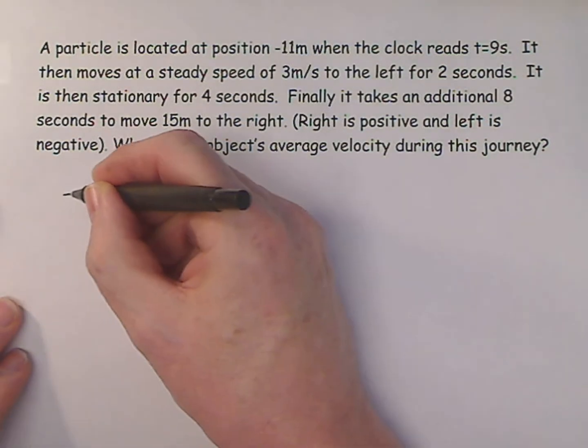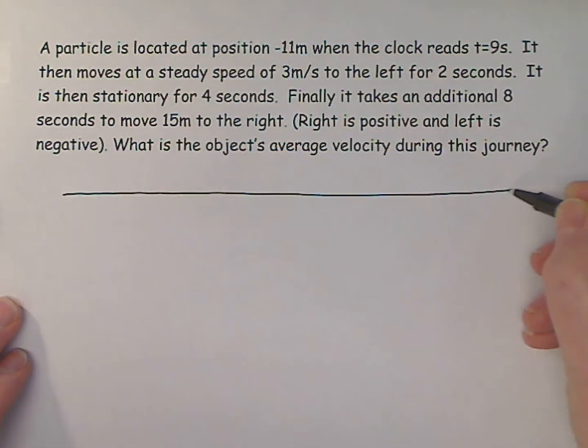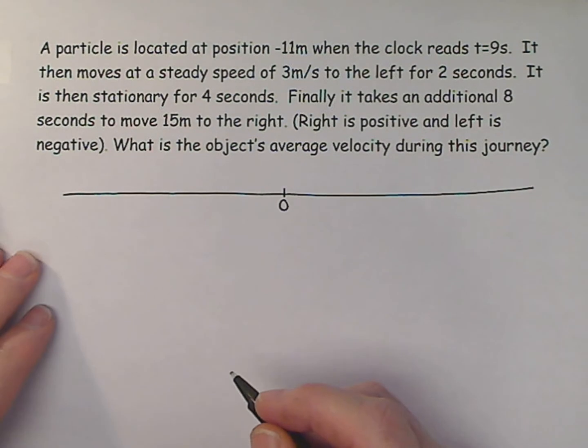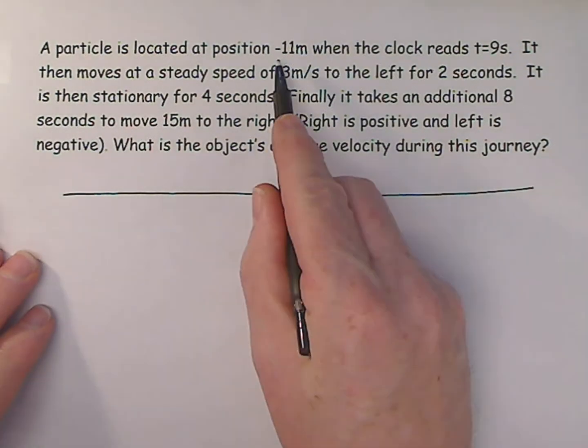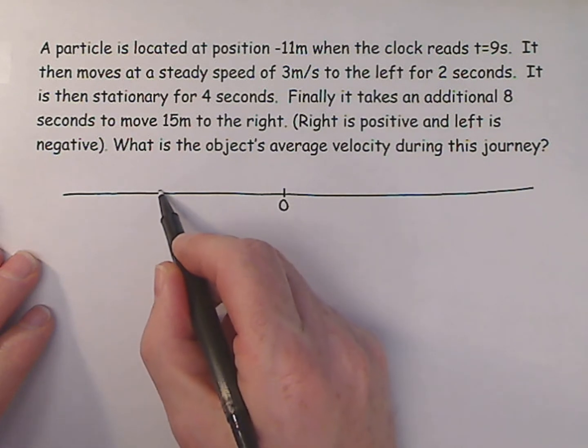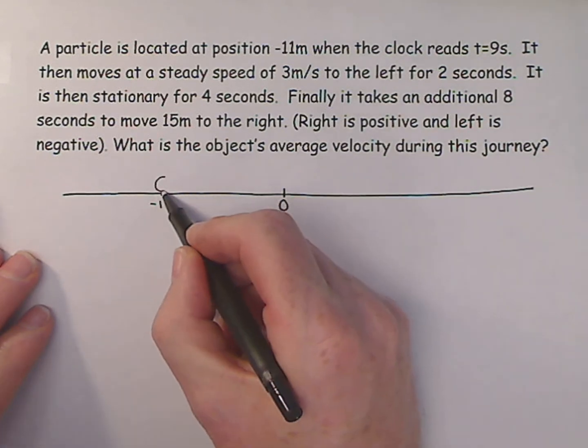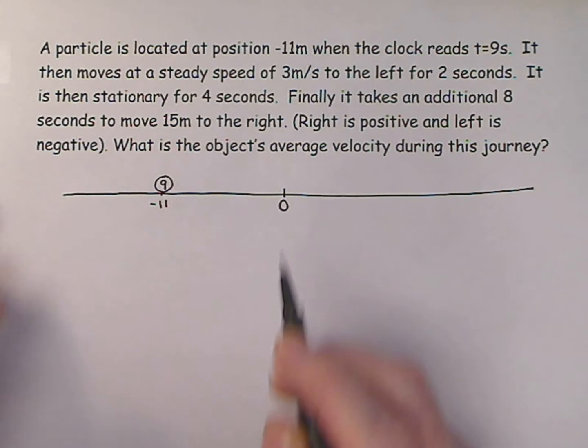So let's start off with a number line. Let's put a 0 in the beginning. And we start off at minus 11. So let's go here, minus 11. And the clock is reading 9, so let's put the 9 already in the clock.